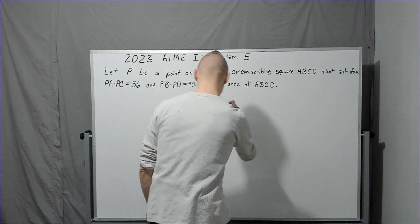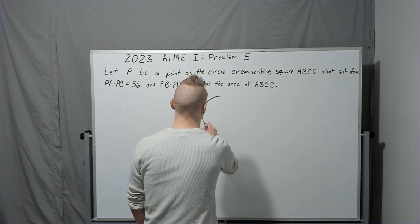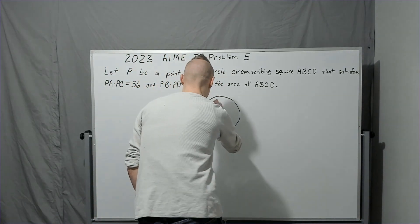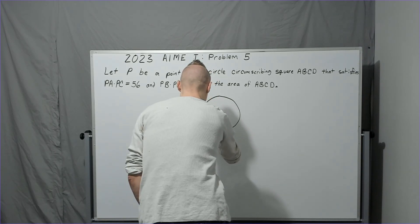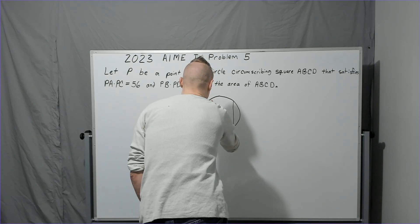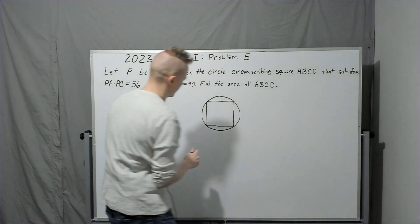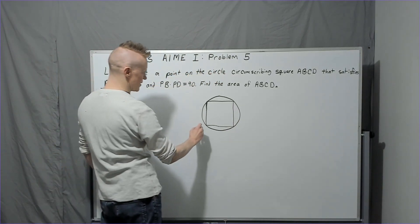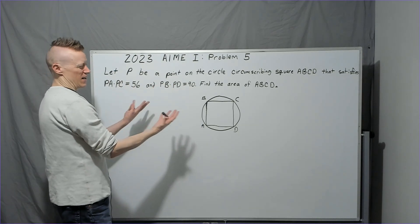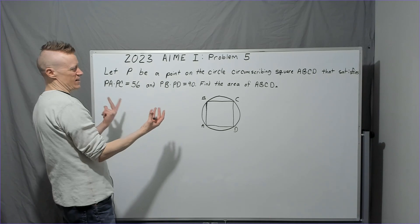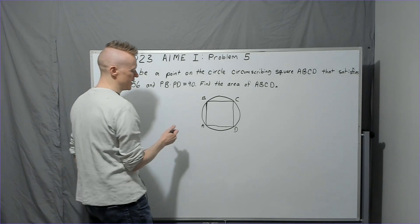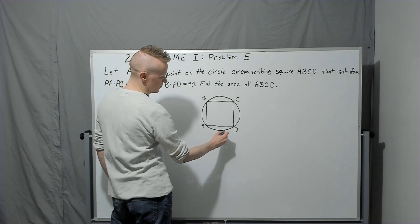Let P be a point on the circle circumscribing square ABCD that satisfies these two statements. In order to process what this is, we probably better draw something, right? So let's go ahead and draw a circle. Let's see if I can do a pretty good one here. That's not too bad for freehand drawing. We're going to put a square inside of it.